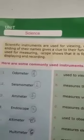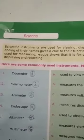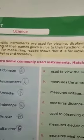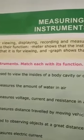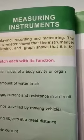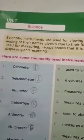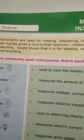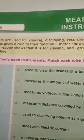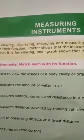Scientific instruments are used for viewing, displaying, recording, and measuring. The ending of their names gives a clue about their function. 'Meter' shows that the instrument is used for measuring.